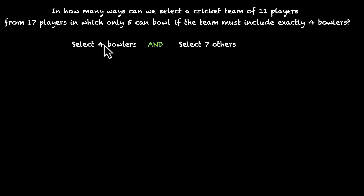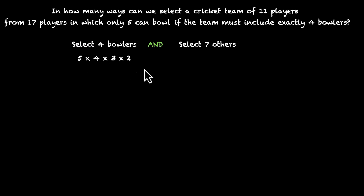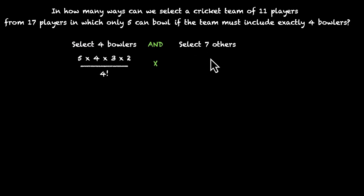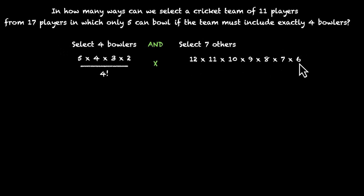How do we do this? We have five bowlers and we're selecting four out of five: that's 5 × 4 × 3 × 2, if we select and arrange them in order — but order does not matter, so we divide by four factorial. This gives us the number of ways of selecting four bowlers out of five. Then we multiply by the ways of selecting seven out of 12 non-bowlers: the first can be picked in 12 ways, then 11, 10, 9, 8, 7, and 6 — but order does not matter, so we divide by seven factorial.